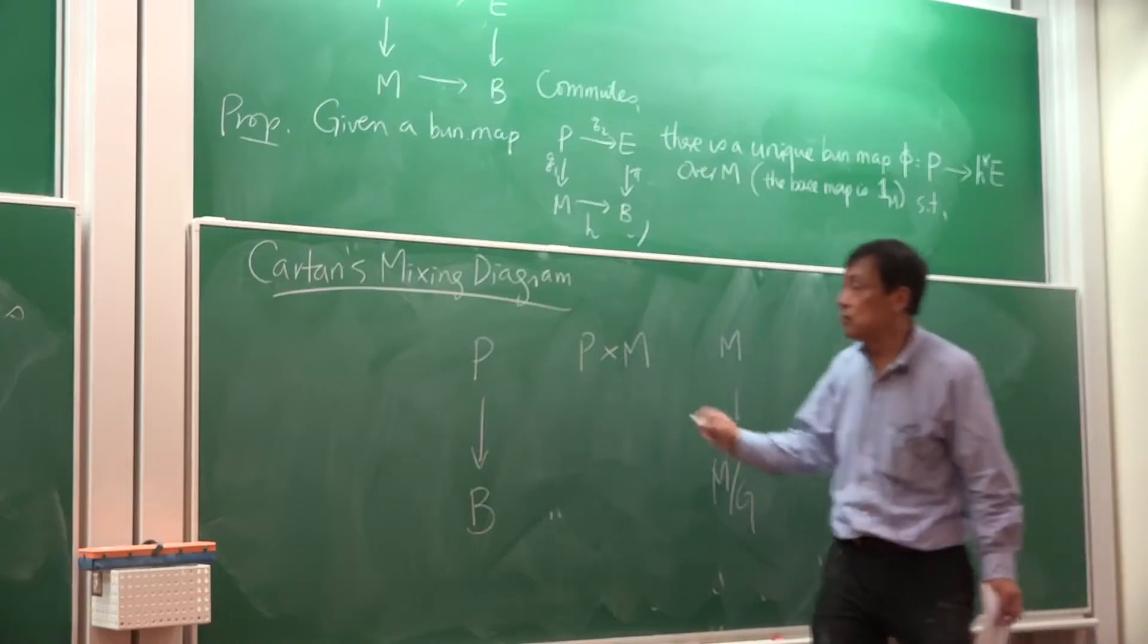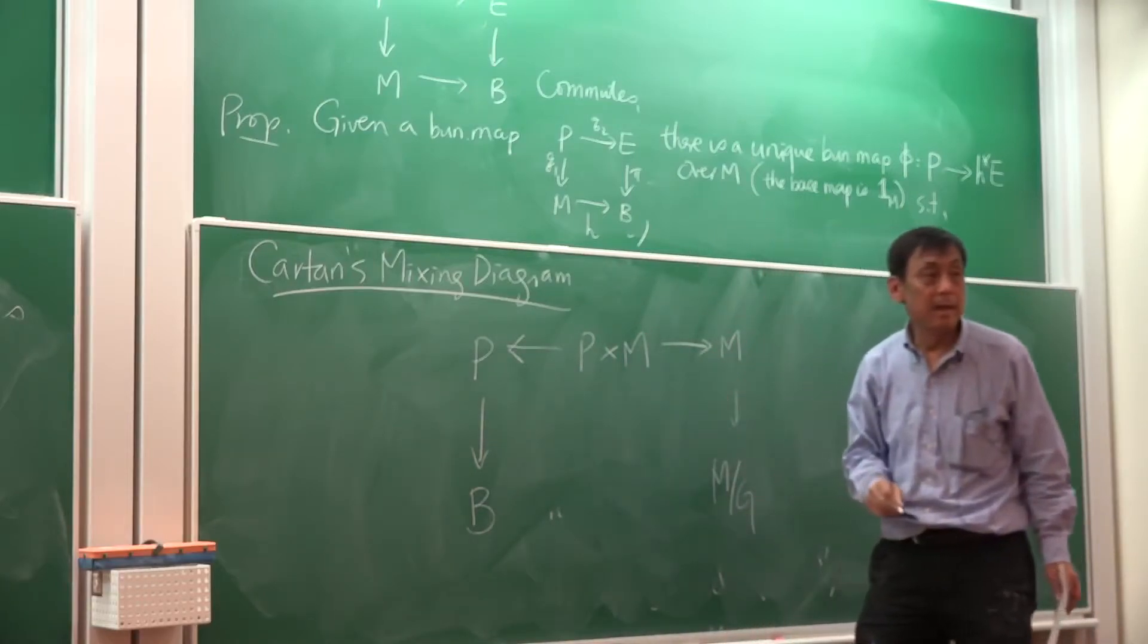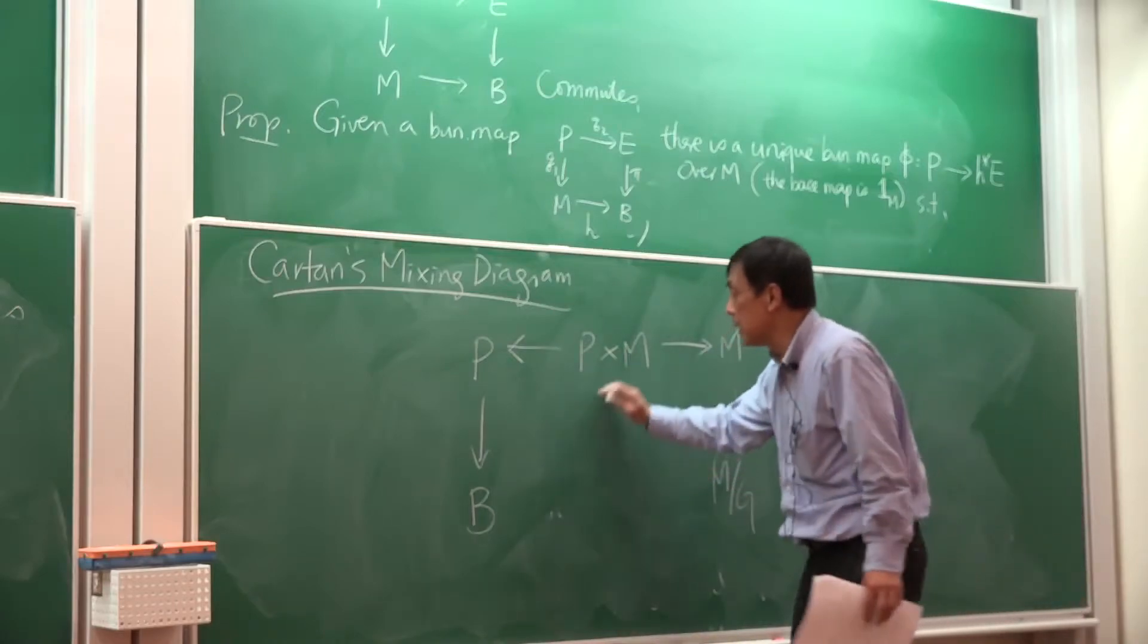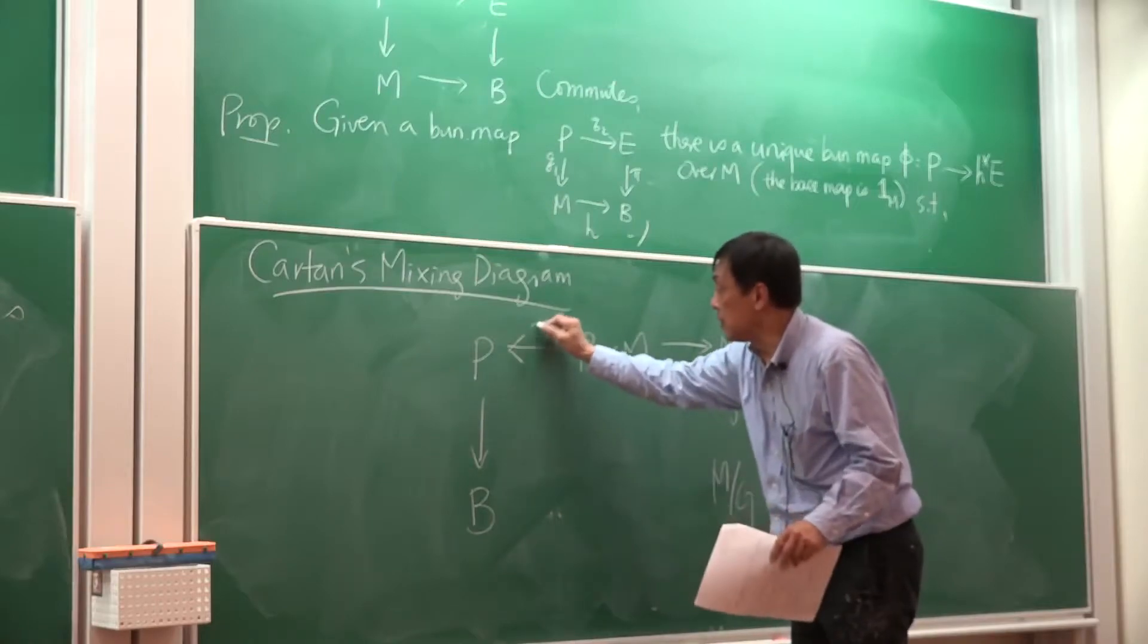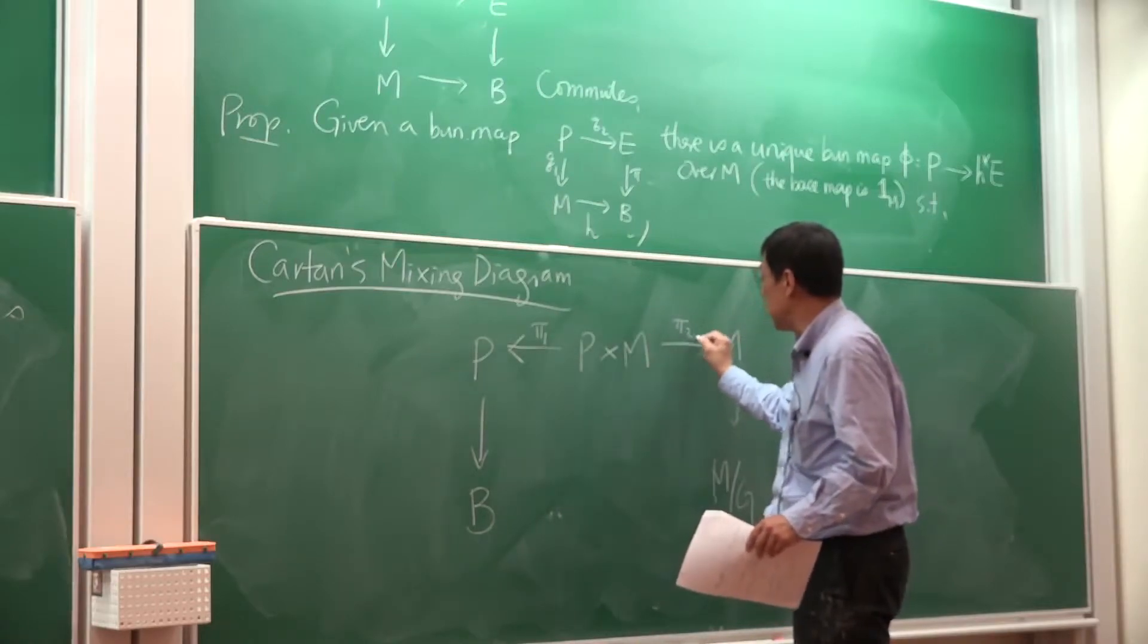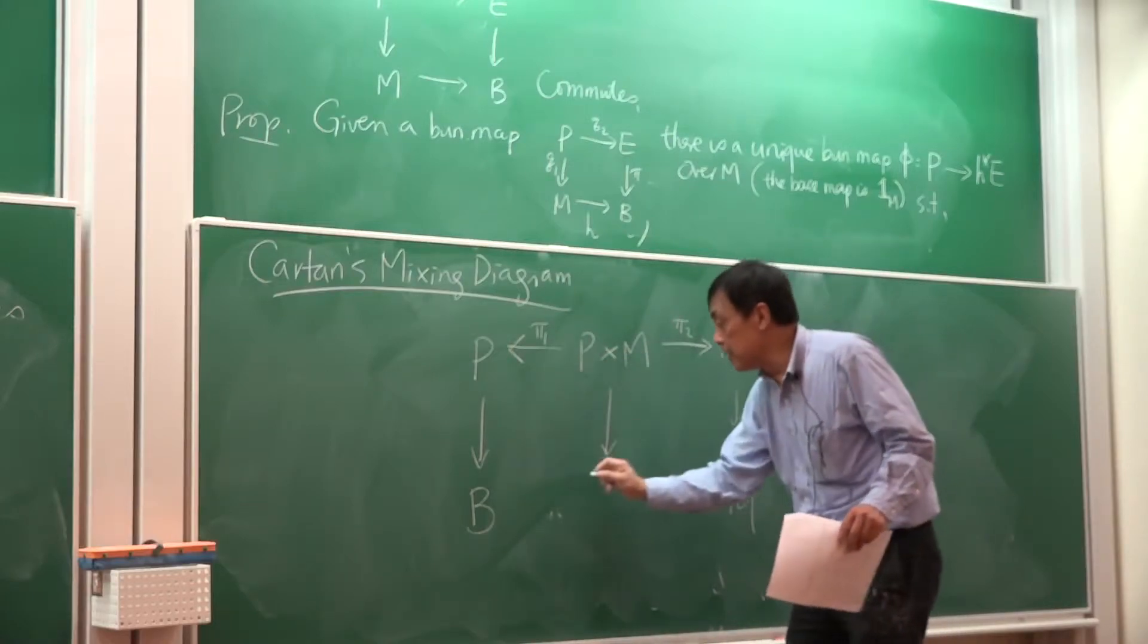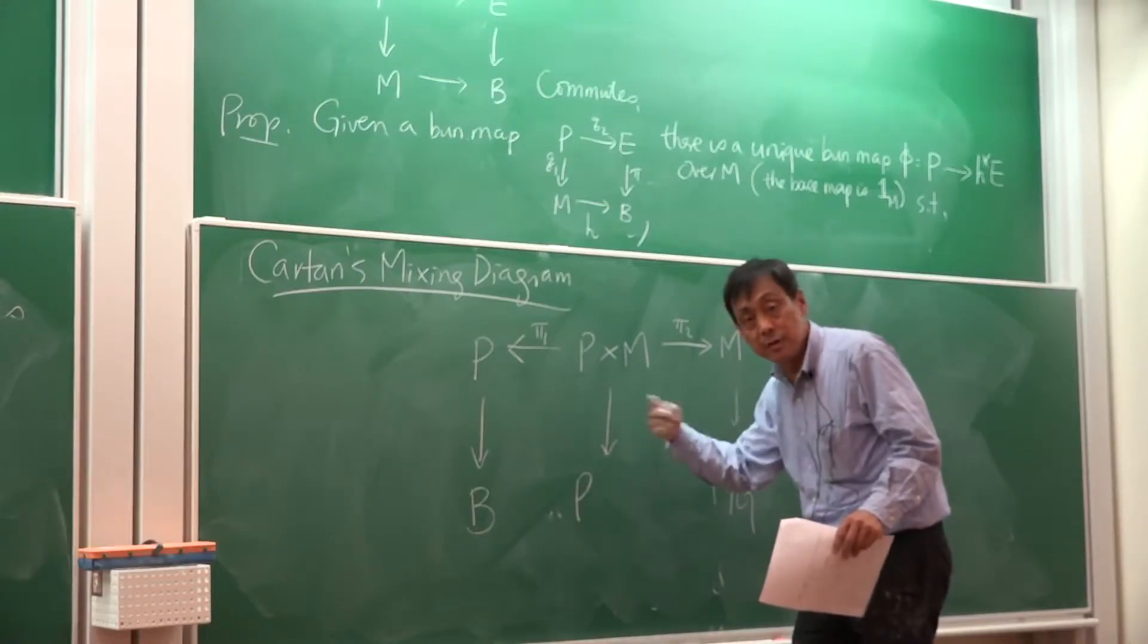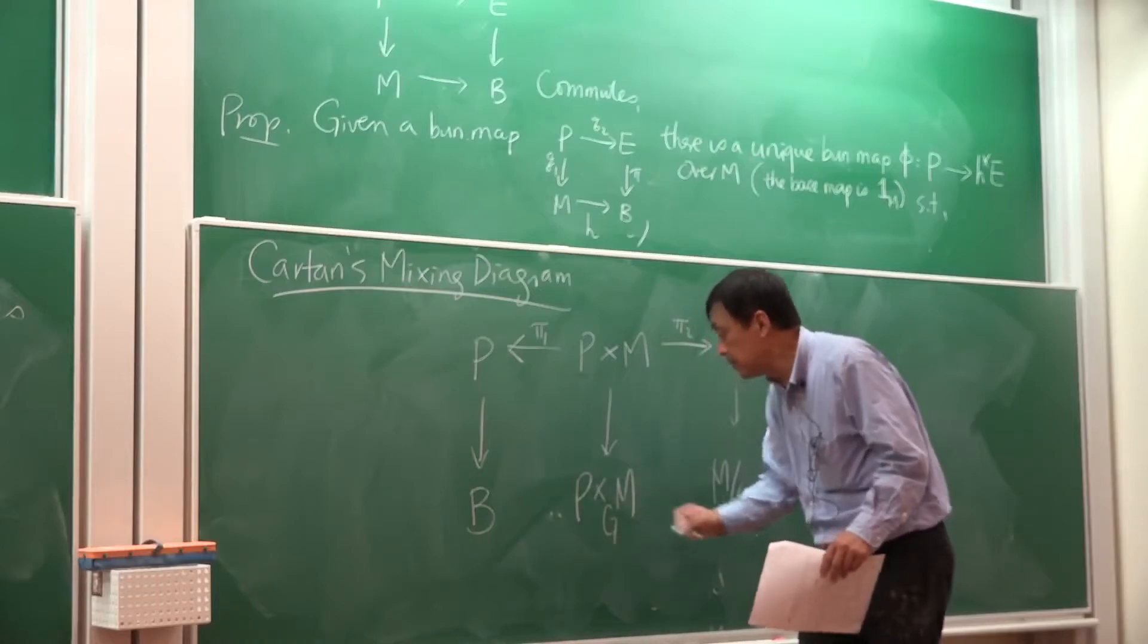And you have two projections, and so these are pi 1, pi 2. And then you can take the quotient of the Cartesian product by G, and then you get the mixing space.